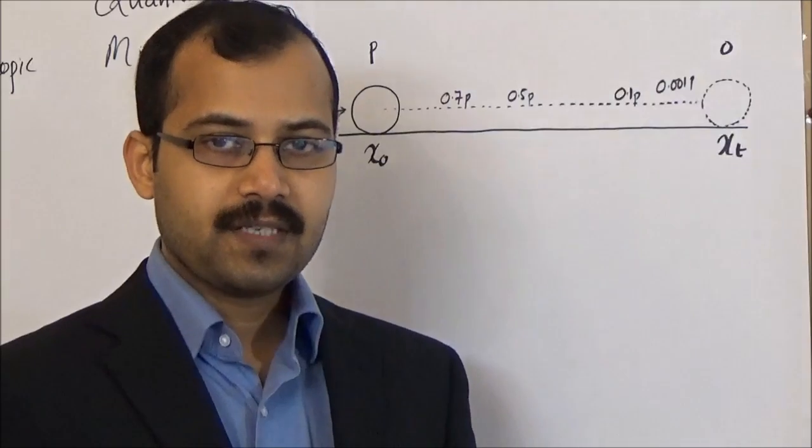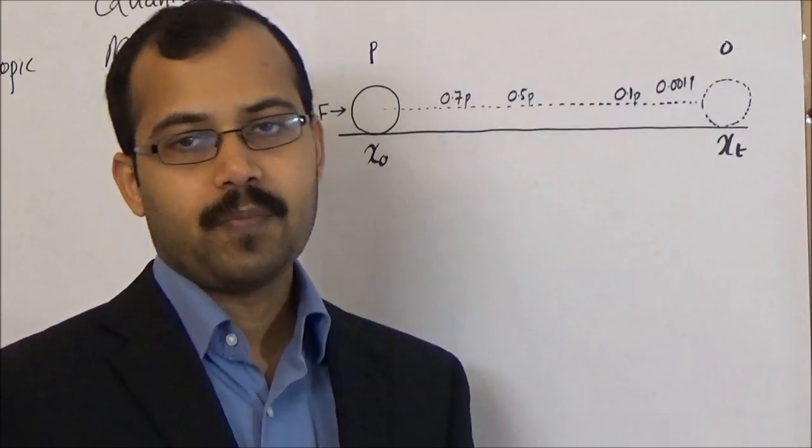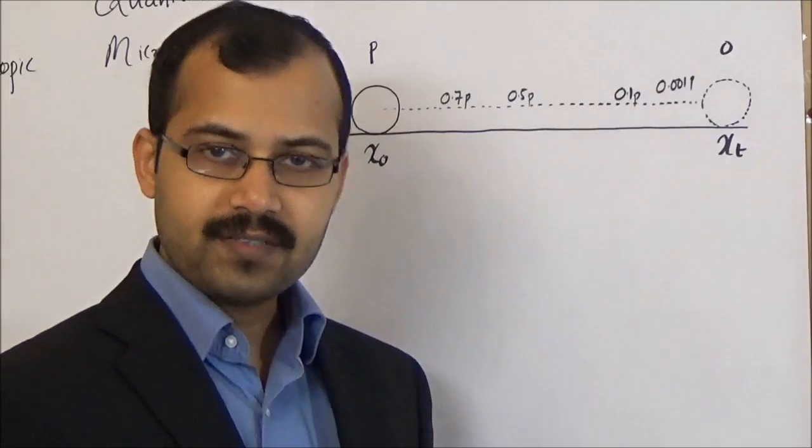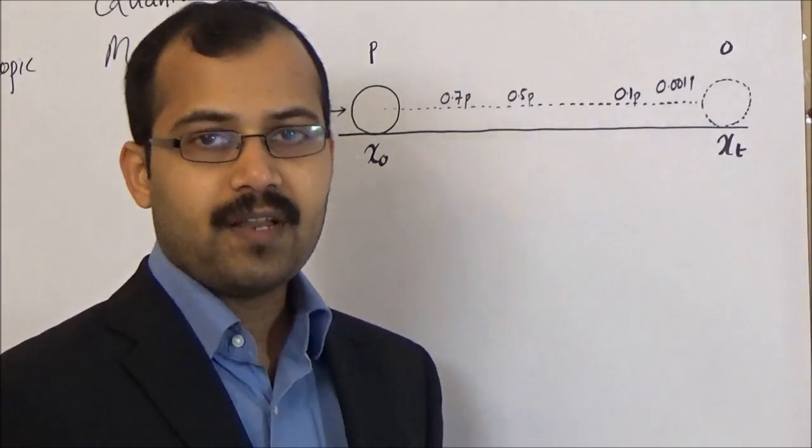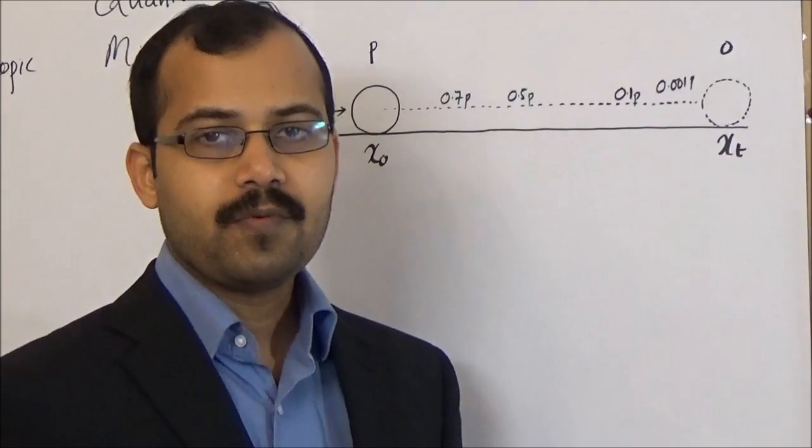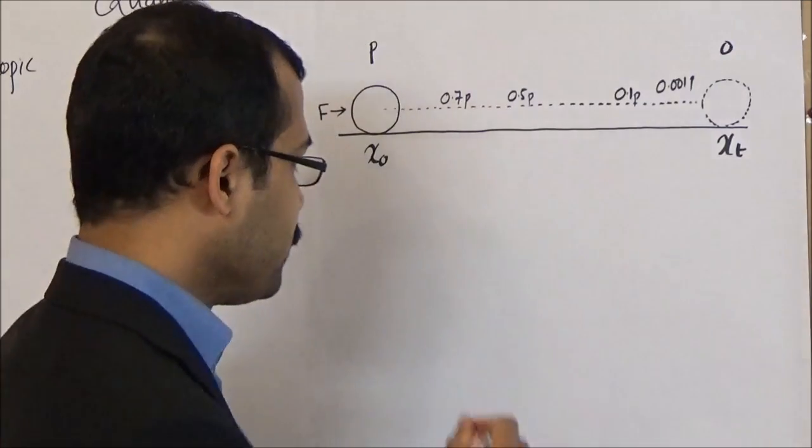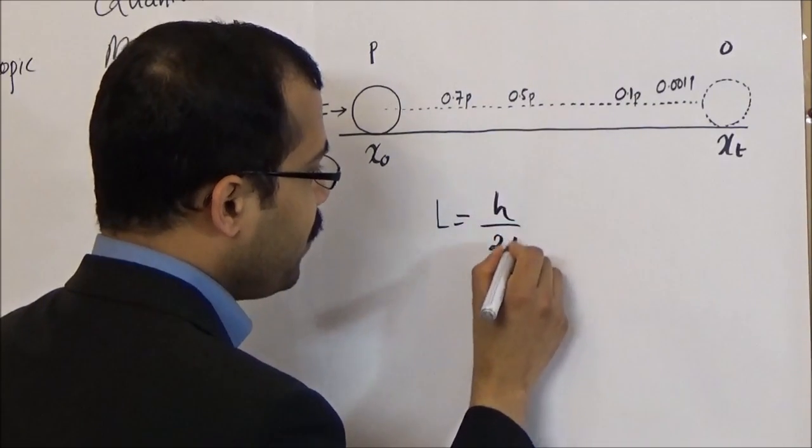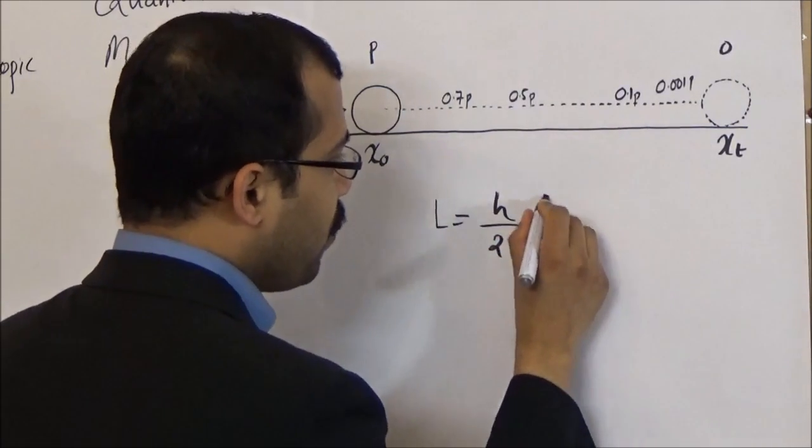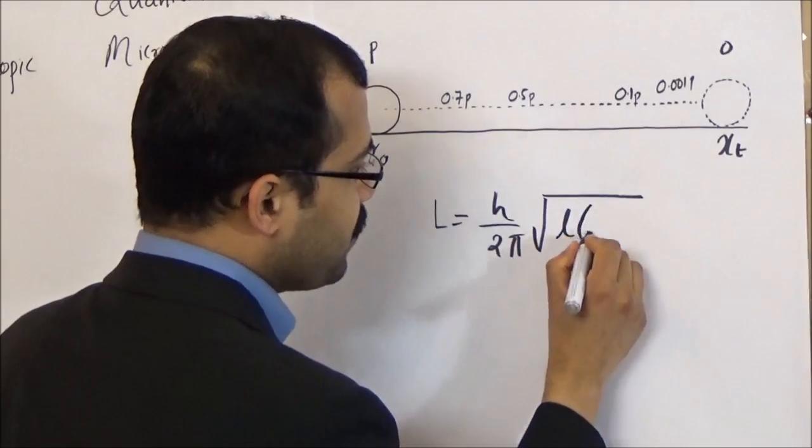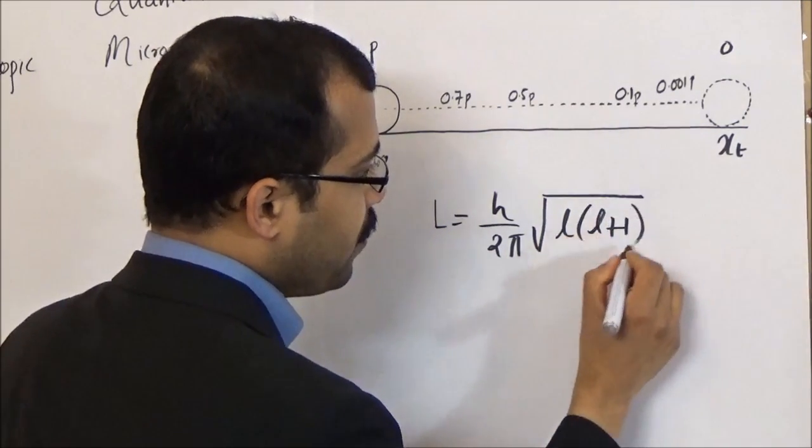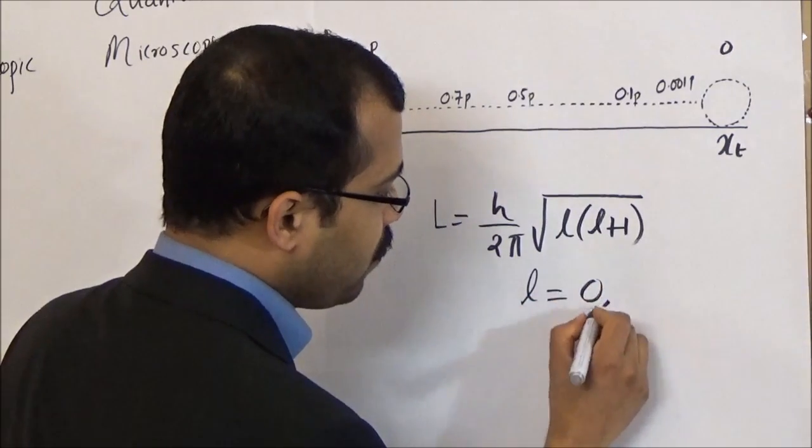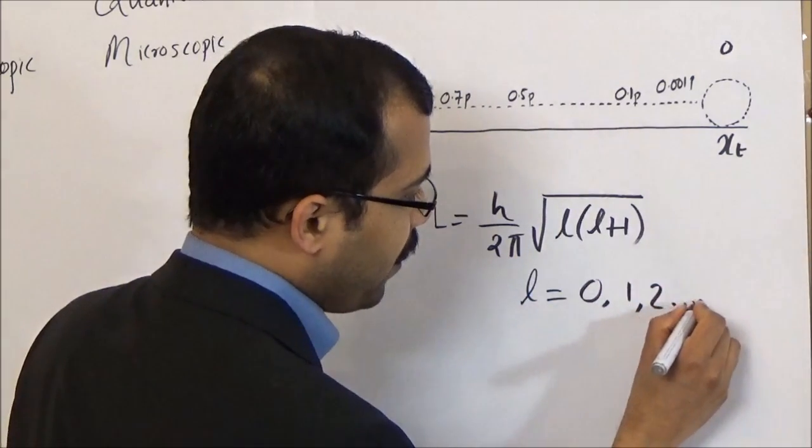Now let's take the example of an electron which is a microscopic particle. Soon we will learn the quantum mechanical treatment of hydrogen atom where we will see that the orbital angular momentum of an electron is L, which is equal to h/(2π) times √(L(L+1)), where the allowed values of L are 0, 1, 2, etc.